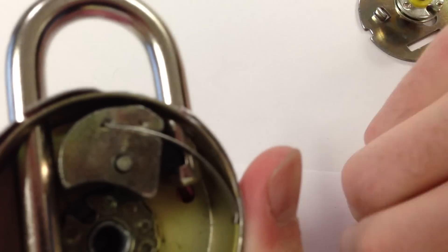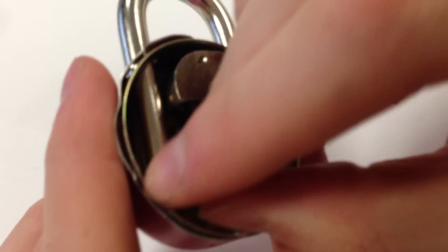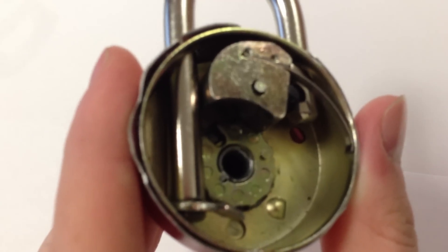Next, we have this simple piece here, which is called the shackle collar. All it does is fit around the shackle like that, and it holds it in place.